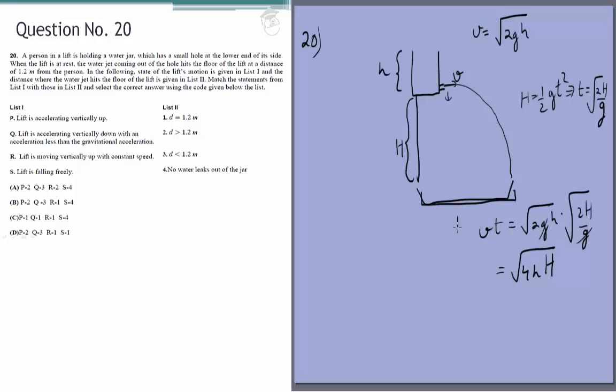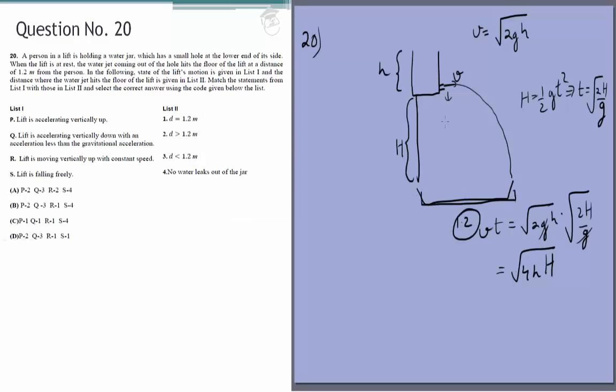Which means the gravity is changing, but we see that the final answer vt or d does not depend on gravity, so it will be 1.2 in every case except in the last case where it is falling freely.